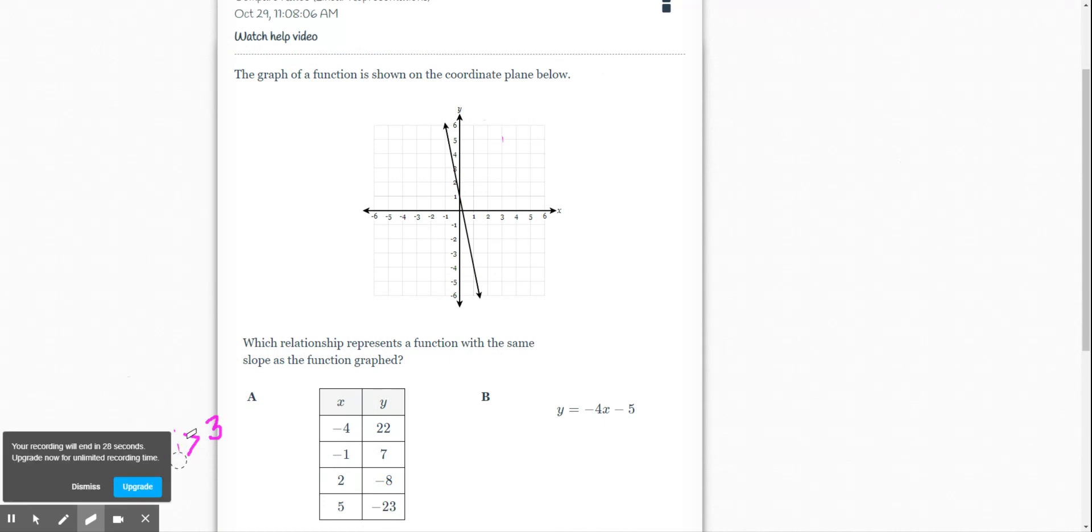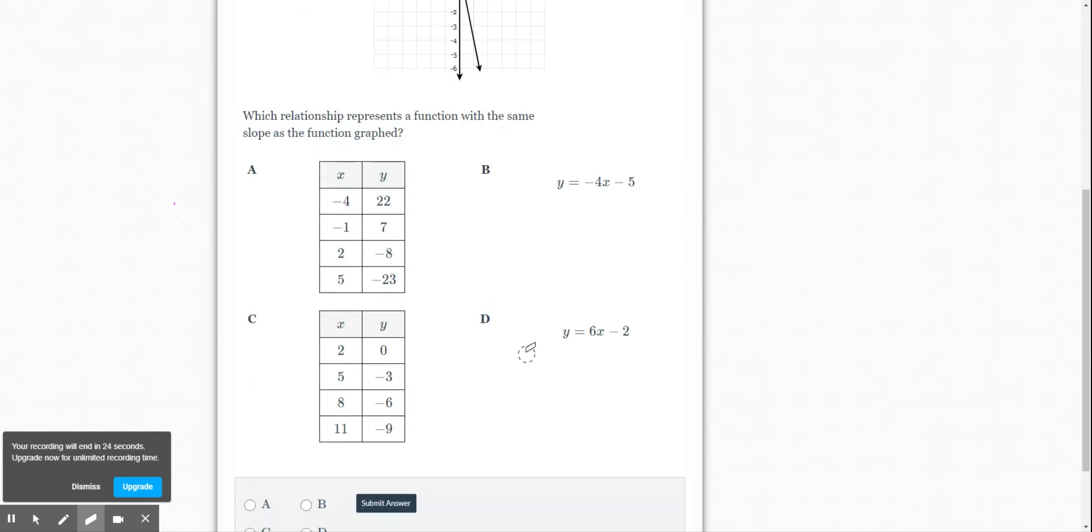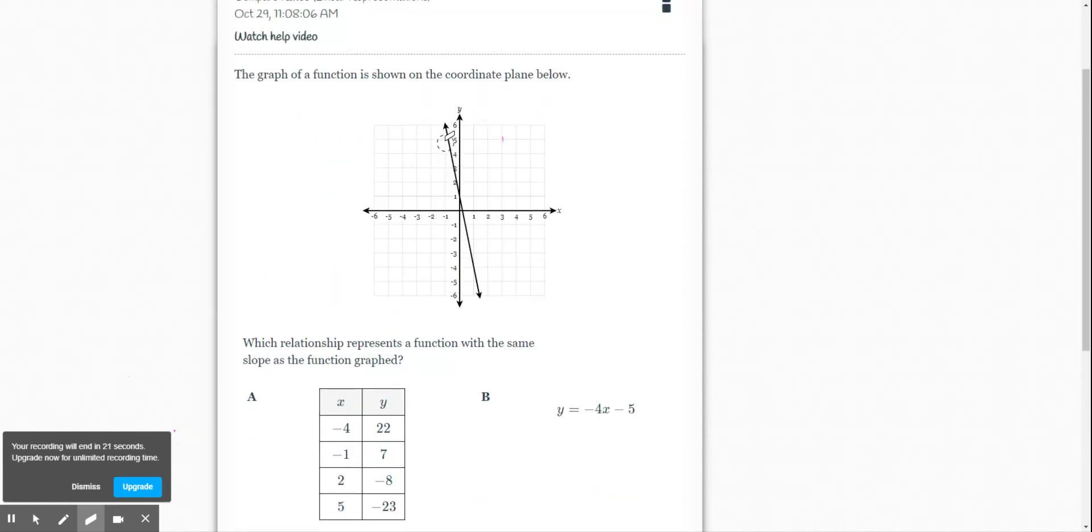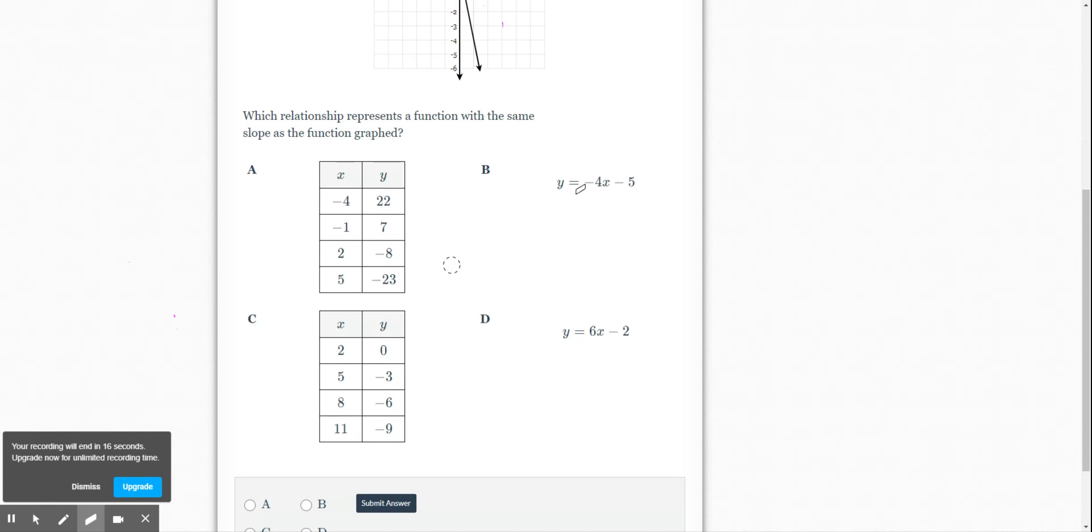Which relationship represents a function with the same slope as this graph. So now you're looking for a table, graph, or equation that's going to also have a slope of down 5 over 1. So of negative 5. And we can see quickly from the equations that they don't have a slope of negative 5. So then you want to hop over to your tables.